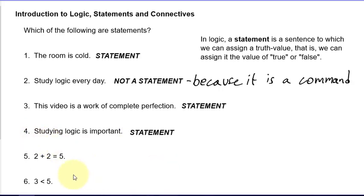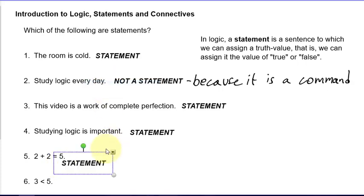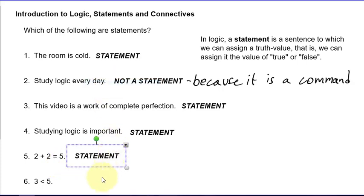Number five says: two plus two equals five. Because we know the meaning of plus and equals and the normal assumption about what those symbols mean, we can all agree that statement is false — but it's still a statement; we can assign it the value false. So not only do we know this is a statement, we know it's a false statement. Number six, three is less than five — we know this is a statement, and we can also agree that it is a true statement.